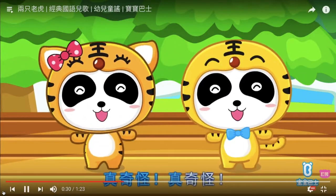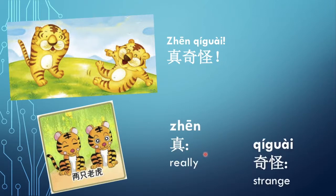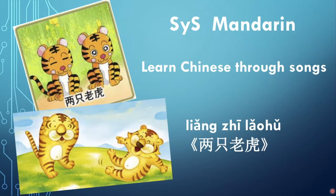真奇怪. 真 means 'really.' 奇怪 means 'strange.' So 真奇怪 means 'really strange.' I hope you found this video helpful. I would suggest you find this song on YouTube and listen to the whole song to see how much you can understand now — I hope 100%! Please like this video and subscribe to our channel. See you next time. 谢谢。再见。 Thank you.